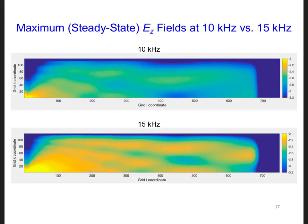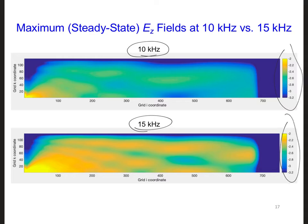I re-ran the model with a source frequency of 15 kHz instead of 10 kHz. Here's a comparison of the results plotted using the same scale. We can see that we have a slightly different radiation pattern from the antenna, and that the waves are reflecting at different positions, and maybe even at different angles, off the ionosphere.